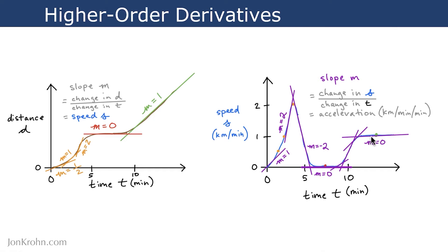And then this line here is this green dot, at the speed of 1. So you can see that the first derivative of this chart is this chart of speed over time. Now if we take the derivative of this — if we draw a slope line here, or here, or here — that slope line is the second derivative, the second-order derivative, of distance over time. And that happens to represent acceleration, so it's a change in speed over a change in time. We can call that acceleration.